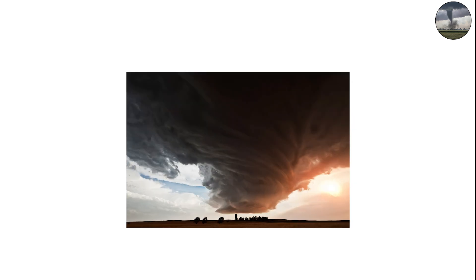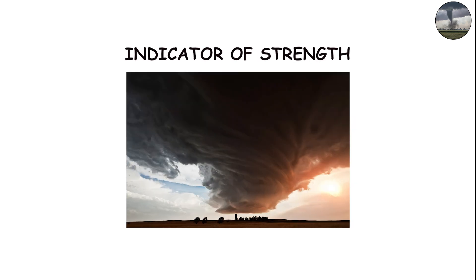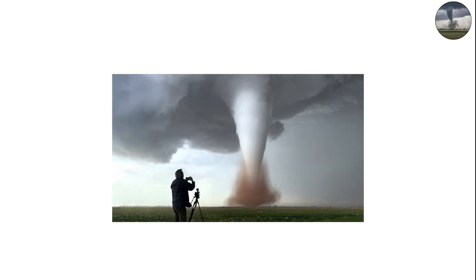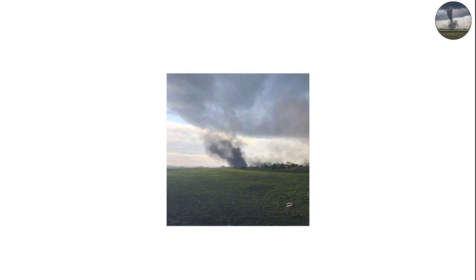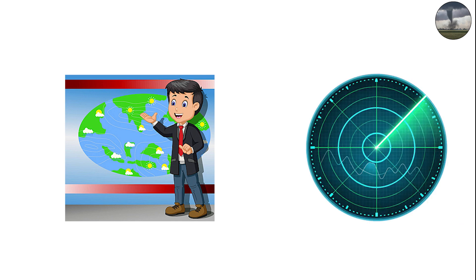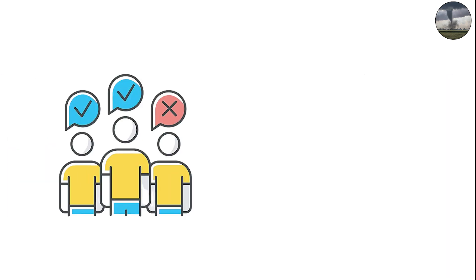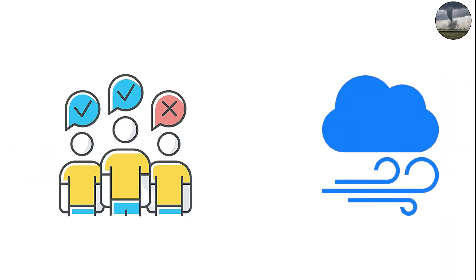What can tornado shape tell us about strength? While shape gives clues about structure, it's not always a reliable indicator of strength. Some narrow tornadoes can still be violent EF4s, while some wide ones might only have moderate winds. Meteorologists rely more on radar data, damage surveys, and wind speed estimates than shape alone.